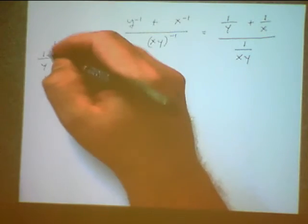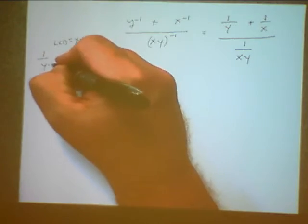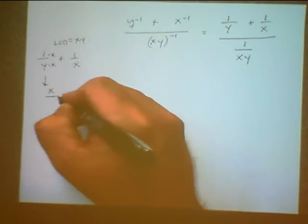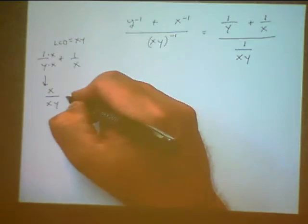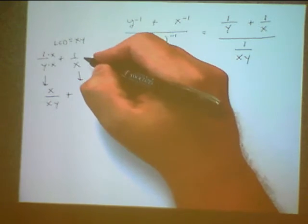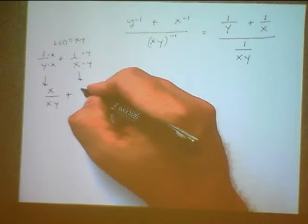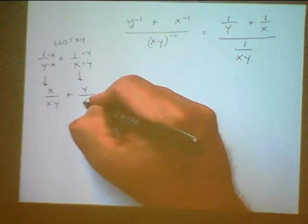So now to convert this first fraction, multiply the top and the bottom by x, and you get x over xy. The second fraction, you need to multiply by y over y, and end up with y over xy.